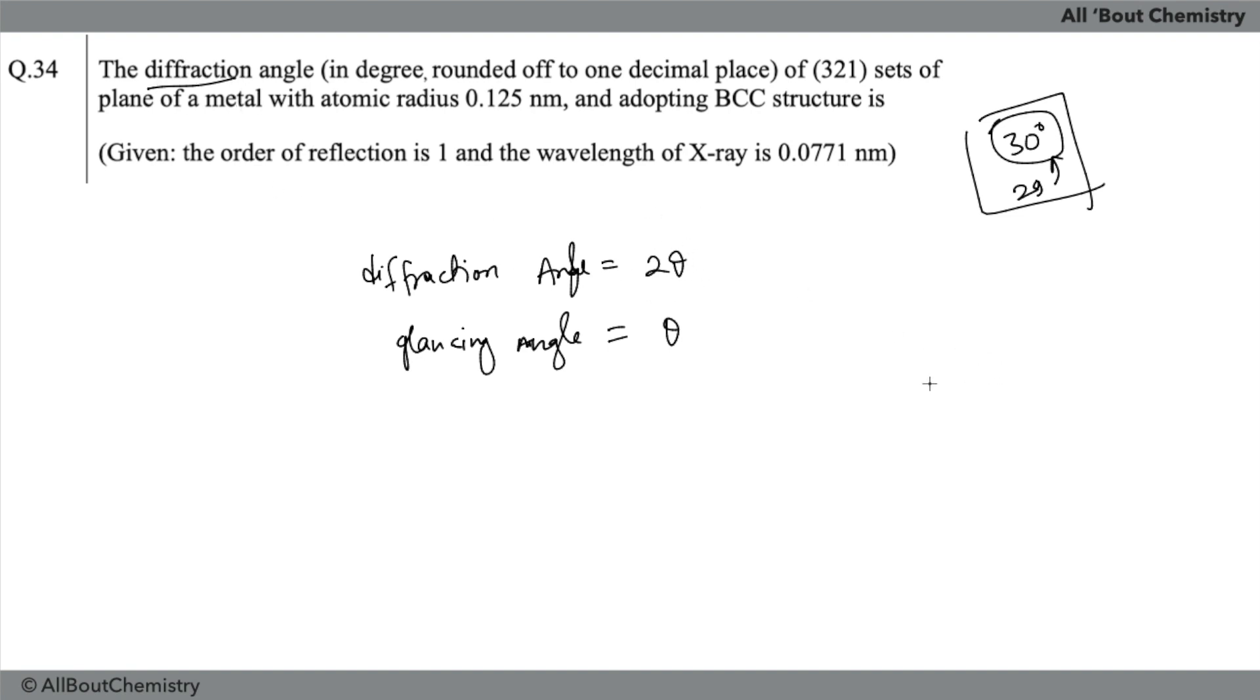But since they are asking about the diffraction angle, it will be twice of that, and that's why the answer will be somewhere around twice of 29 point something. We were getting 29.6 or something, so twice of that will be like 59.2 to 60. They have given the range of 59.0 to 61.0, and yes that's the correct answer.